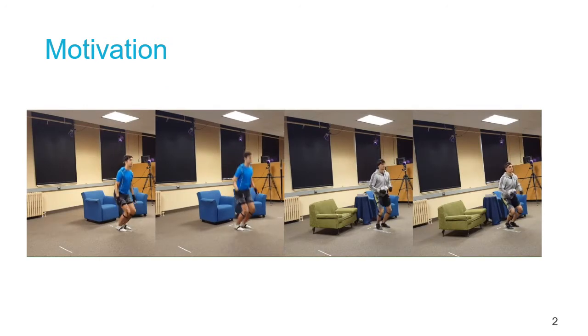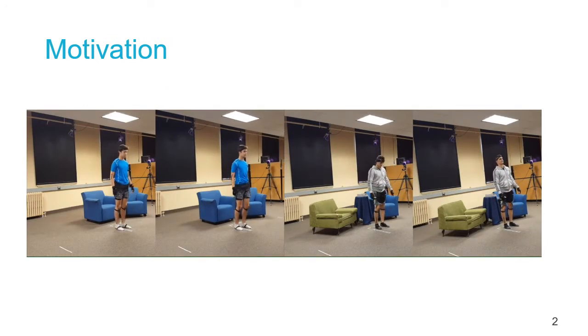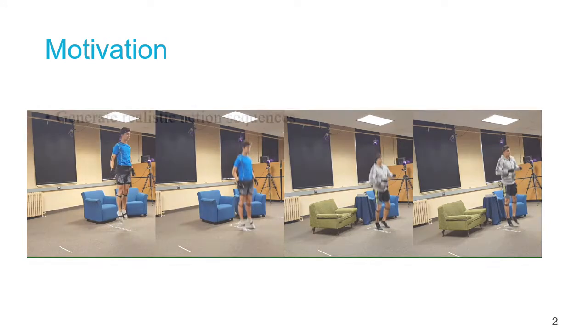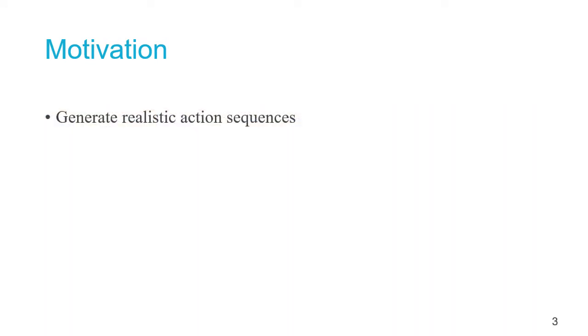When we extend this to multiple individuals, that level of variability only increases. The goal of our system is therefore threefold. We want to generate realistic action sequences, exhibit naturalistic variation between those sequences, as we've just demonstrated with those example videos.